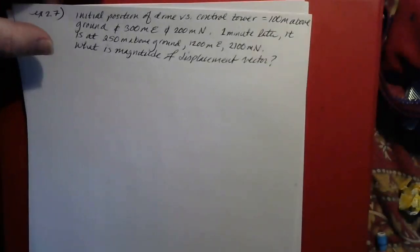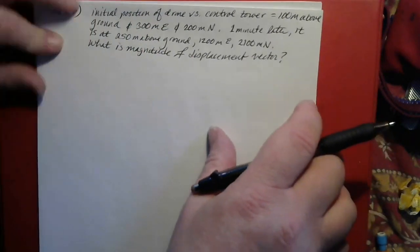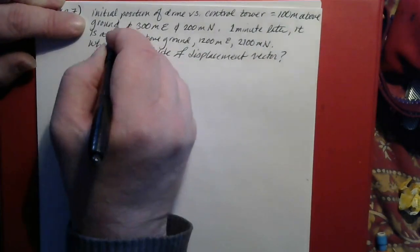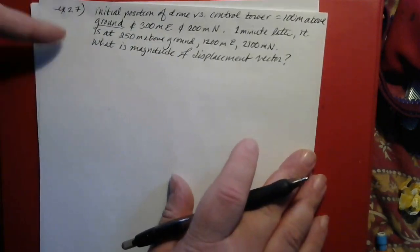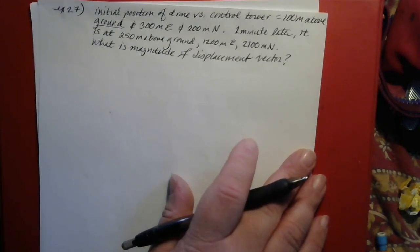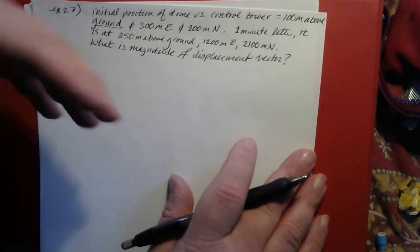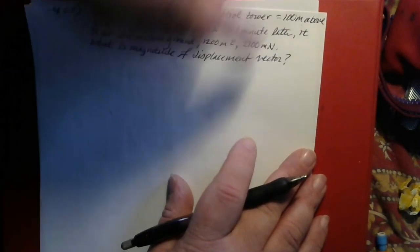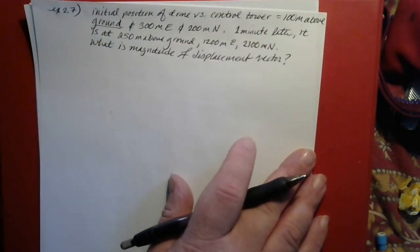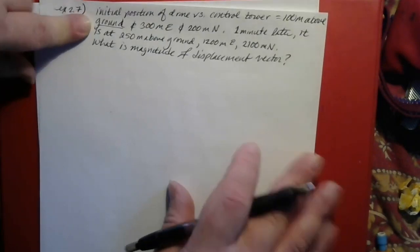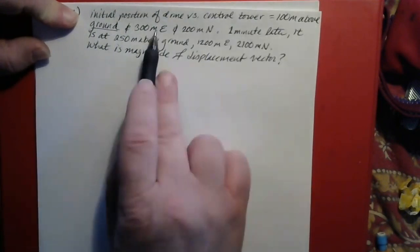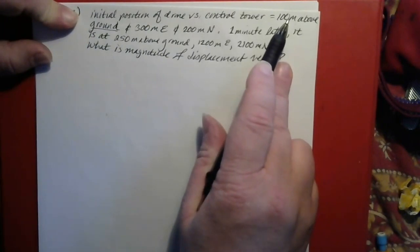An example of three-dimensional coordinates is given in the book using a drone and its position versus the control tower. Its initial position is 100 meters above ground — note it says above ground, not above the control tower. That matters when measuring vertical z-coordinates. The initial position is also 300 meters east and 200 meters north. So you have your x coordinate, your y coordinate, and your z coordinate.